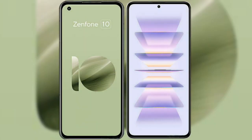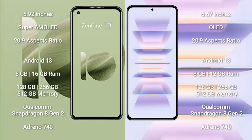I will compare the new Asus Zenfone 10 with Redmi K60 Pro. Asus Zenfone 10 comes with a 5.92-inch Super AMOLED display and a 20:9 aspect ratio. Redmi K60 Pro comes with a 6.67-inch OLED display and a 20:9 aspect ratio.